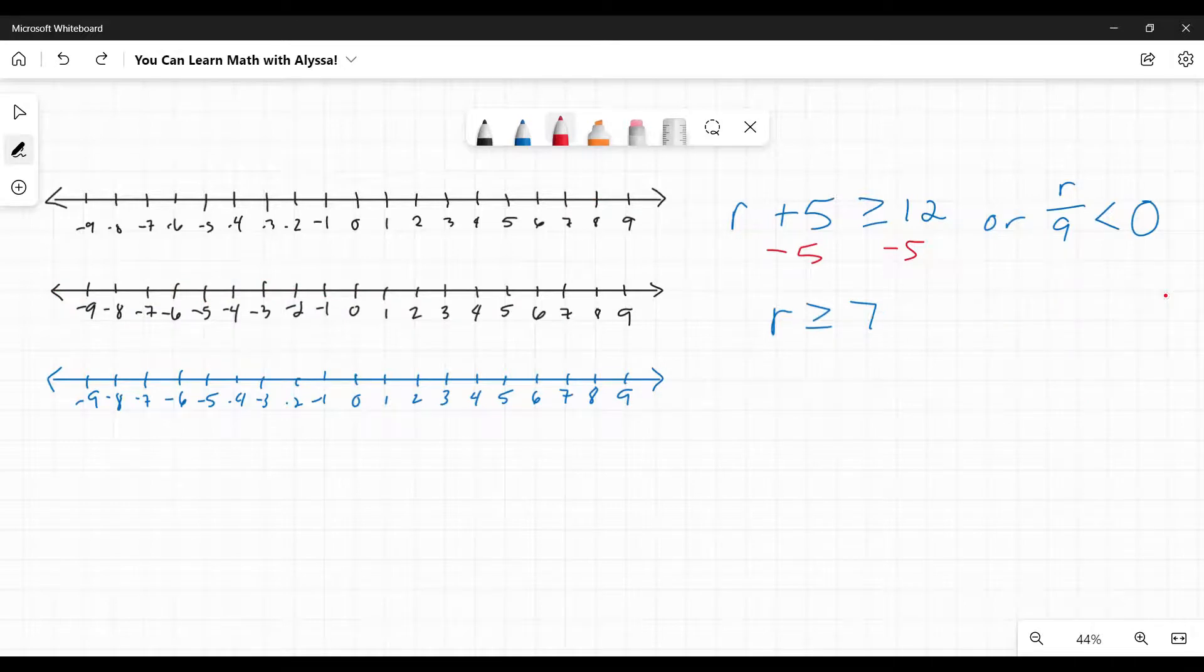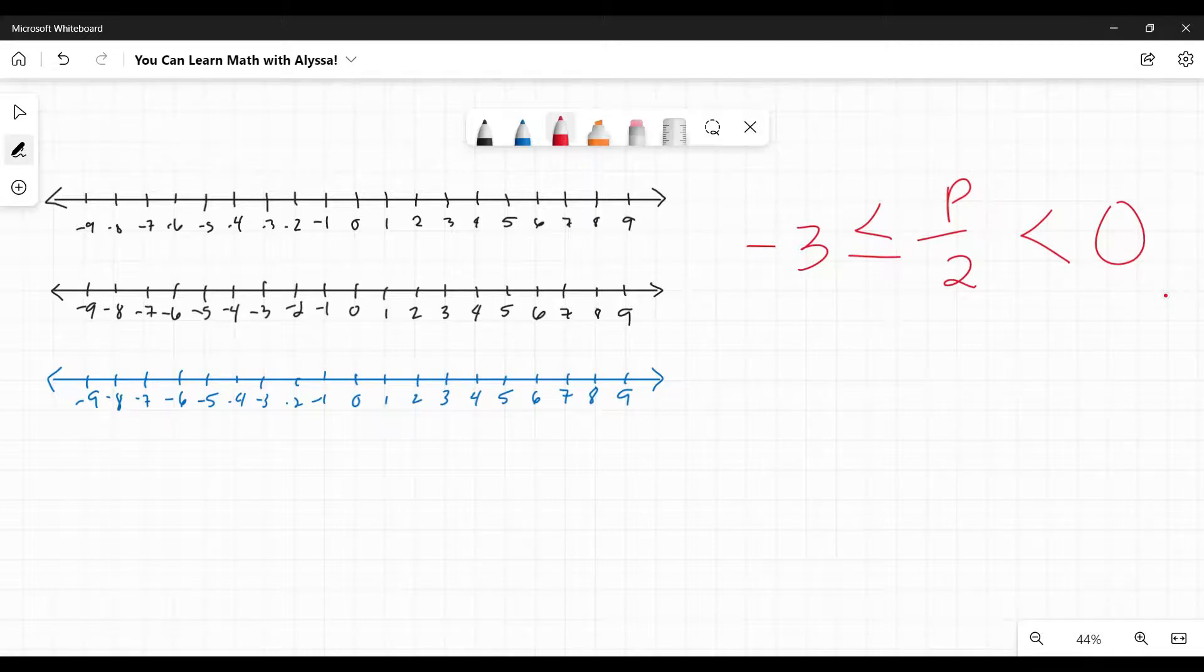Something that's going to come up with the and problems is there's another way of writing it. They may give it just like this, where they have the two equations and then they have and written in between them. They also like to do where they combine it into one. So here's an example of that: negative 3 is less than or equal to P over 2 is less than 0. Once it gets combined like that, that can have some students going, what is this? How do I graph this? You do this: you separate into two separate equations and you deal with them separately.